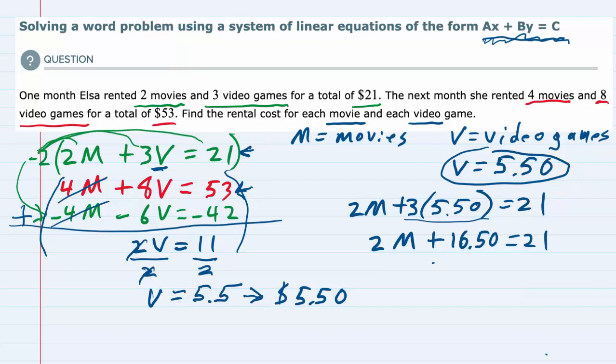And then subtract that 16.50 over to the other side. Remember, we're trying to get the 2M by itself. The left-hand side, the 16.50s cancel, leaving 2M equals 21 minus 16.50 gives us 4.50.